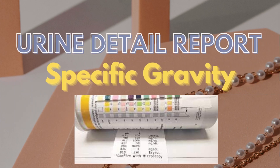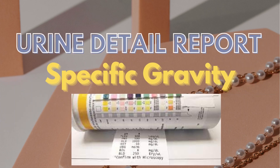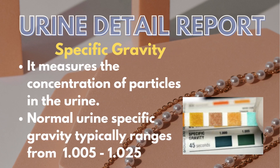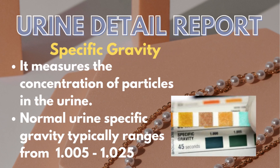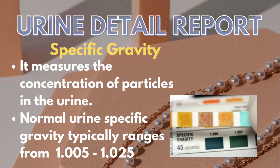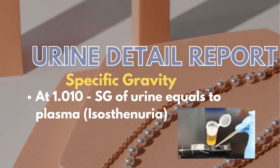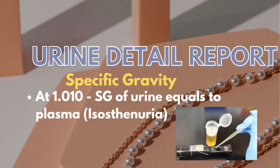Then is a very important characteristic: specific gravity, which measures the concentration of particles in the urine. Normal urine specific gravity typically ranges from 1.005 to 1.025. At 1.010, specific gravity of urine equals that of plasma, also called isosthenuia.